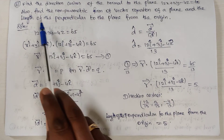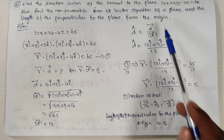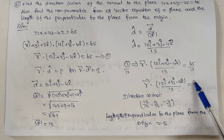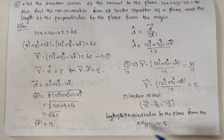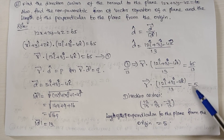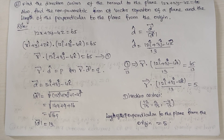Next, the length of perpendicular from the plane to the origin. The length p equals the value p, which is 5. So this is the answer for this problem.